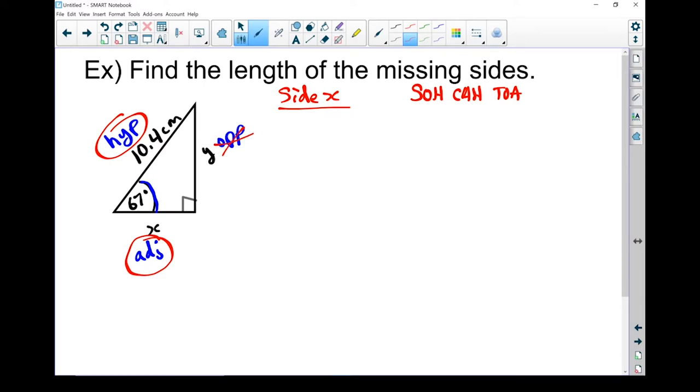So when I go back and I look over at SOH CAH TOA, anything that's got the opposite side in it, I'm going to ignore. Sine has the opposite side on it. Not useful to us right now. Cos doesn't have it, but tan does have the opposite side. So it's not useful to us either right now. We're going to use the cosine ratio.